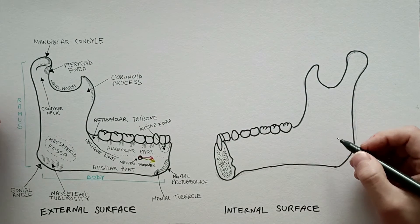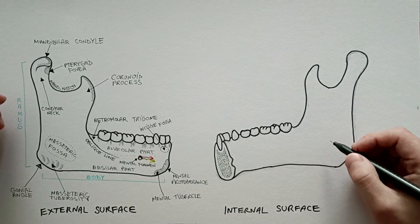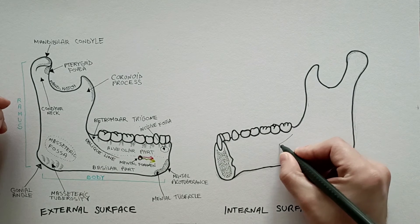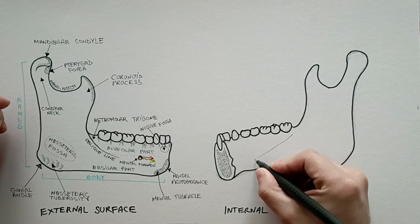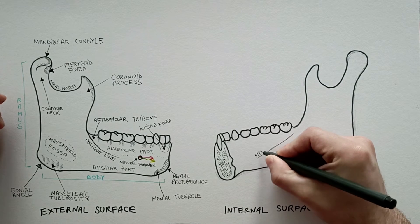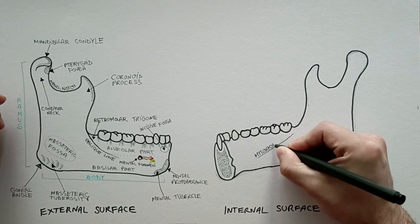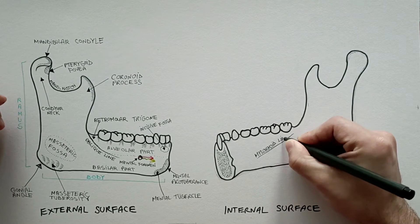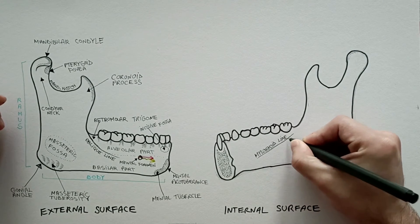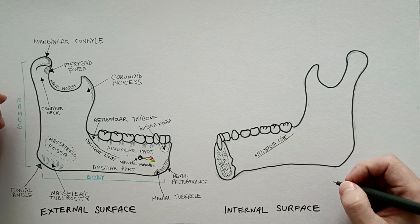Now let's draw the features of the internal surface of mandible. The mylohyoid line obliquely crosses the medial surface of the corpus of the mandible, beginning near the alveolar margin at the last molar position and diminishing as it runs anteroinferiorly. It marks the attachment site for the mylohyoid muscle.